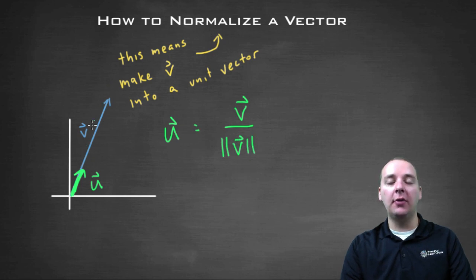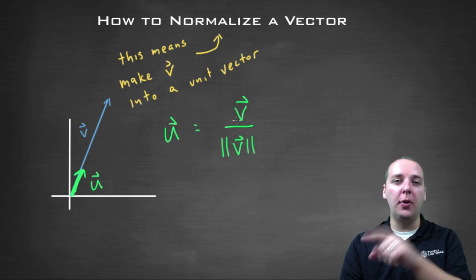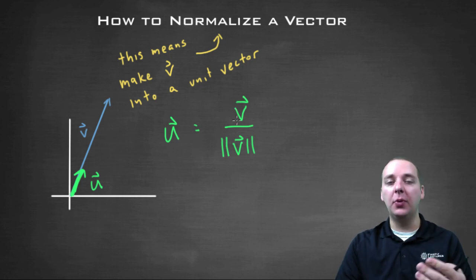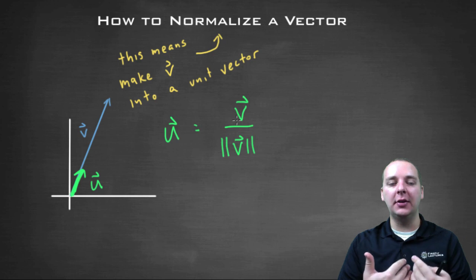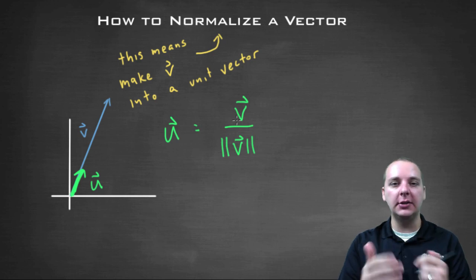So for example, if this long vector had a length of five, you would divide all the components of V by five. And what that does is it scales the vector back, without changing the direction, and makes it a unit vector.